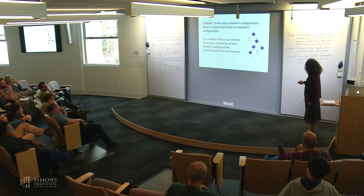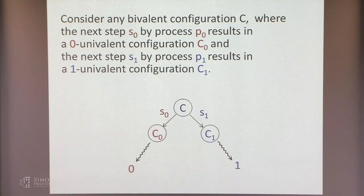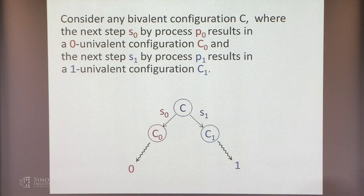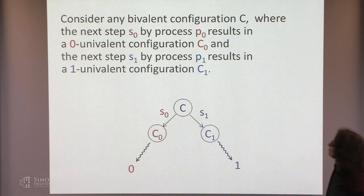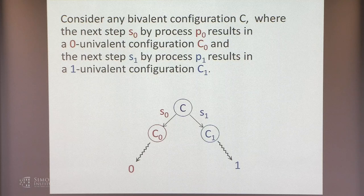To prove Lemma 2, suppose for a contradiction there's a bivalent configuration C such that all steps lead to univalent configurations. Without loss of generality, the next step s0 by process P0 results in a 0-univalent configuration C0, and the next step s1 by process P1 results in a 1-univalent configuration C1. We then do a proof by cases, getting a contradiction in each case.